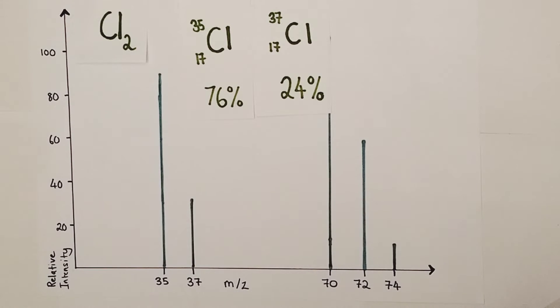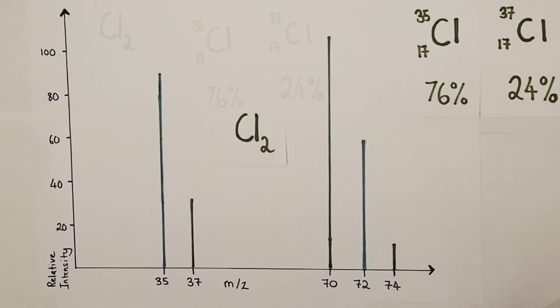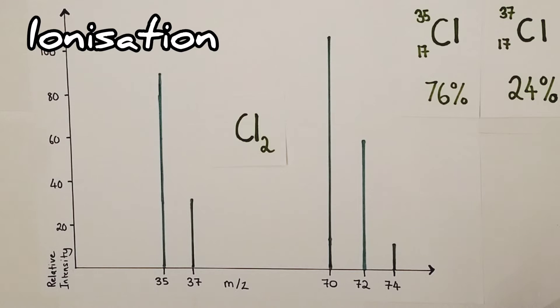These isotopic abundances will be reflected in our mass spectrum. In mass spectrometry the gaseous chlorine molecules are fed into the mass spectrometer and the first step will be ionization - bombarding those gaseous chlorine molecules with high energy electrons, trying to knock off an electron to turn them into positive molecular ions which will be moved through the mass spectrometer and hit the detector and produce a peak.